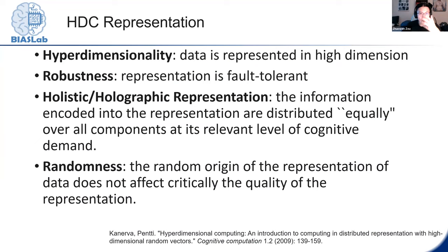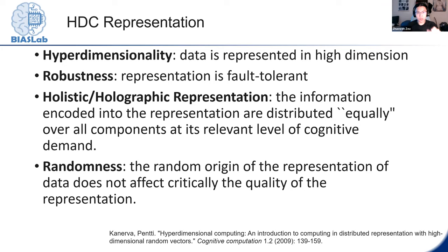The motivation behind HDC is discussed from two lenses: representation and cognitive computation. One key property is holistic or holographic representation, where the information encoded in a hyperdimensional vector is distributed equally over all components at the relevant level of cognitive demand. When paired with redundancy, this representation is robust — the entirety of the data is mapped evenly and redundantly into each component, so deleting or adding random noise to some components does not break the data's integrity.